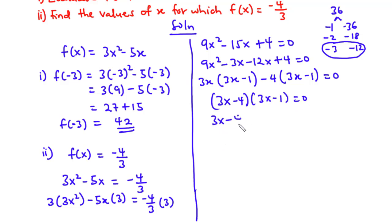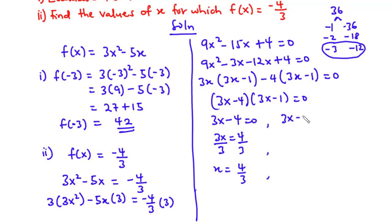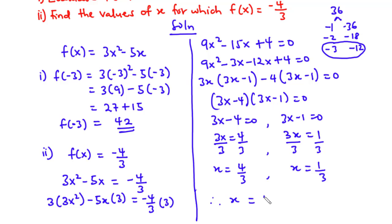For 3x minus 4 equals 0, we get 3x equals 4, so x equals 4 over 3. For 3x minus 1 equals 0, we get 3x equals 1, so x equals 1 over 3. Therefore x equals 4 over 3 or x equals 1 over 3.